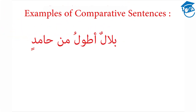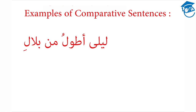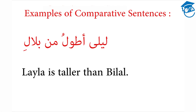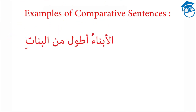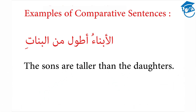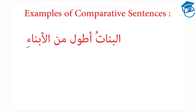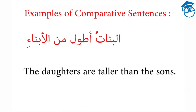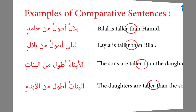Looking at example sentences using comparative adjectives: Bilal is taller than Hamid; Laila is taller than Bilal; the sons are taller than the daughters; and the daughters are taller than the sons. In each of these cases, the comparative adjective is followed by the word min, which is translated as 'than.'